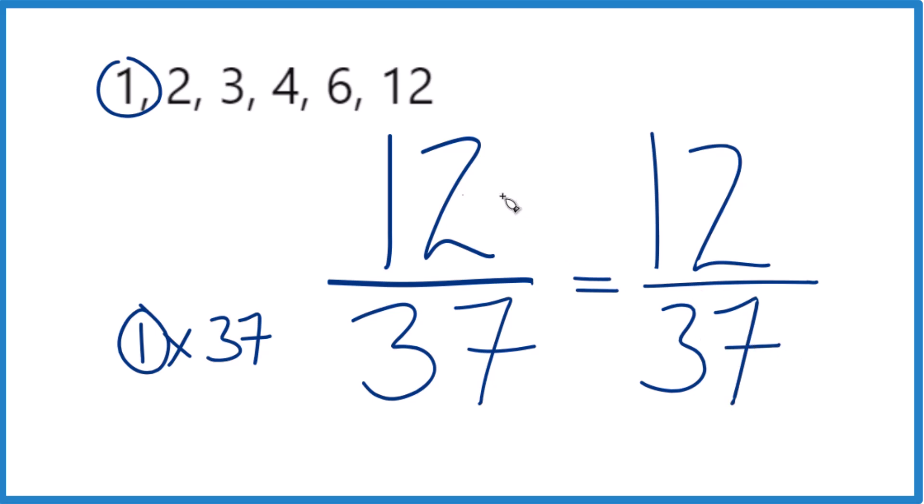What that means is that 12 37ths is already in lowest terms. We can't reduce or simplify it any further.